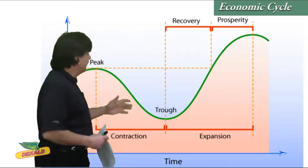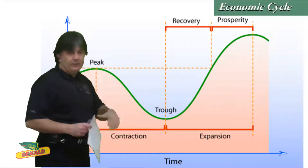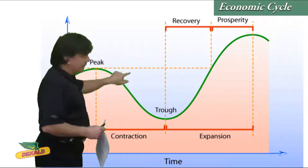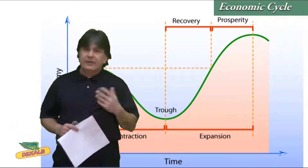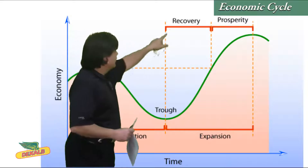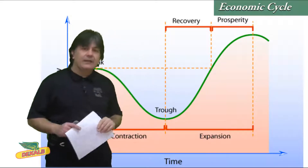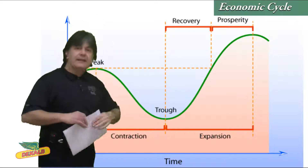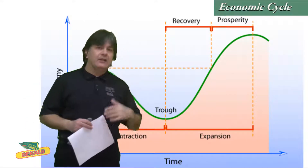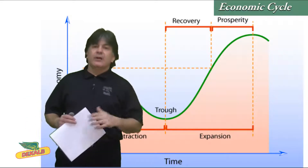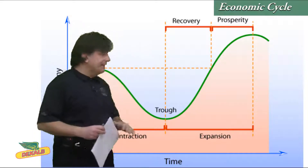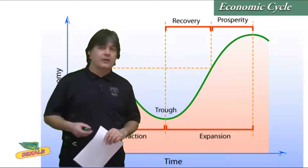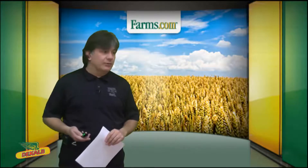We've got an economic cycle that we're going to look at. In 2008-9, we were going through that contraction phase, and in 2010-11, we're going into this recovery phase. We're not quite at the peak yet, but understanding this cycle and knowing where we're at at any given point in time can actually help us determine whether grain prices are going to move higher or lower, because this will determine whether demand gets destroyed or whether demand starts to improve.